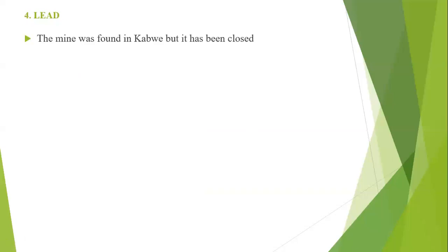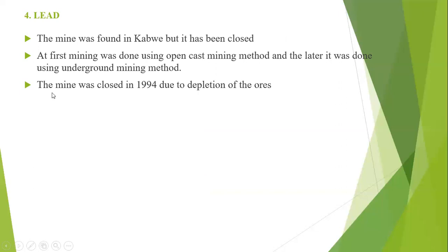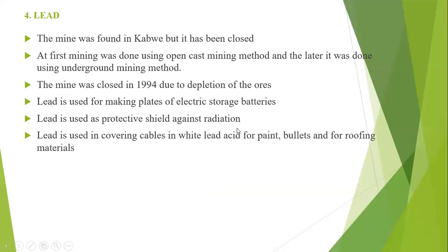The mine where lead was being mined in Zambia was only in Kabwe, but it has now been closed. At first, mining was done using open cast mining method and later using underground mining. The mine was closed in 1994 due to depletion of the ores. Lead is used for making plates of electric storage batteries, as a protective shield against radiation, in covering cables, in white lead acid for paints, bullets, and roofing materials.